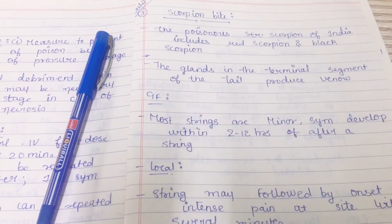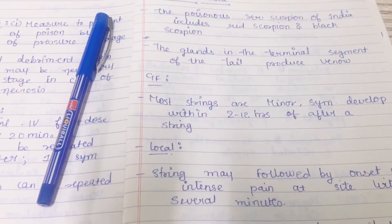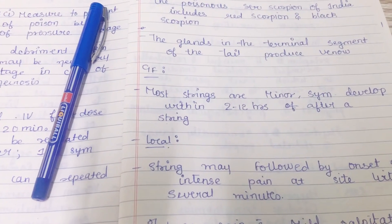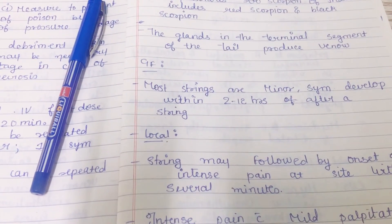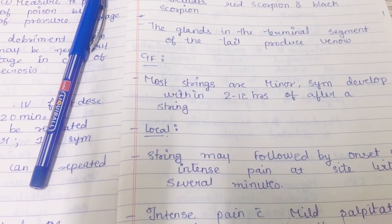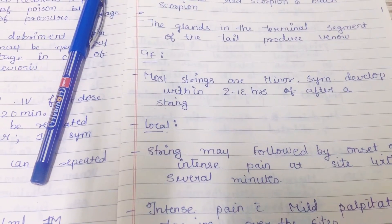Scorpion bite. The poisonous scorpions of India are red scorpion and black scorpion. The glands in the terminal segment of the tail, which means the end part of the tail, contains a gland in which the venom is stored.